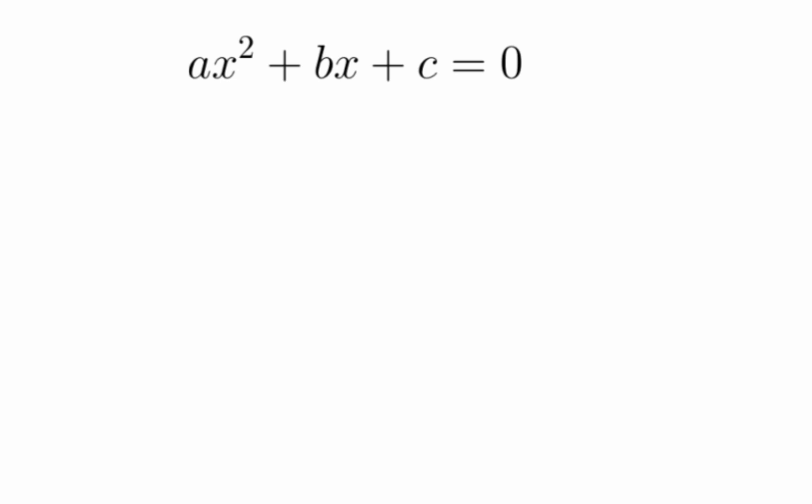The first step is to divide everything by a in our ax squared plus bx plus c equals 0, because if you want to square root the x squared term, which we are going to do in the following steps, we have to get rid of a, because then we don't want an annoying square root a in our equation.